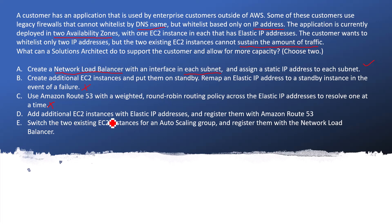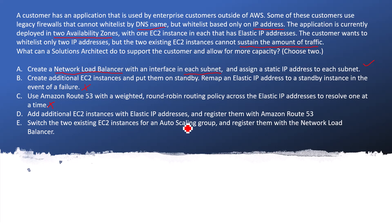Option D: Add additional EC2 instances with elastic IP addresses and register them with Amazon Route 53. This is again not the right answer. The reason is that we are not providing any kind of scalability — we are just adding EC2 instances, but if you are adding them without being able to utilize them properly, there is no use for these EC2 instances. So I will mark it as a wrong answer.